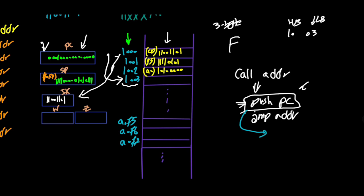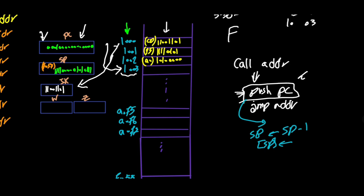But what is PUSH? PUSH is itself composed of smaller operations. SP is decremented by one, then either the lower byte or higher byte is put onto the stack at whatever SP is pointing to. Then SP is decremented again and another value is placed there. The rule is: lower byte at lower address, higher byte at higher address. Since SP is being decremented, the second write is at the lower address, so 10h goes first and 03h goes second.